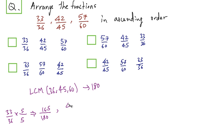42 by 45 can be converted to this equivalent fraction with 180 as a denominator by multiplying it by 4 by 4. Now 57 by 60 can be converted to the equivalent fraction by multiplying it by 3 by 3. 60 into 3 becomes 180. 57 into 3 becomes 171.